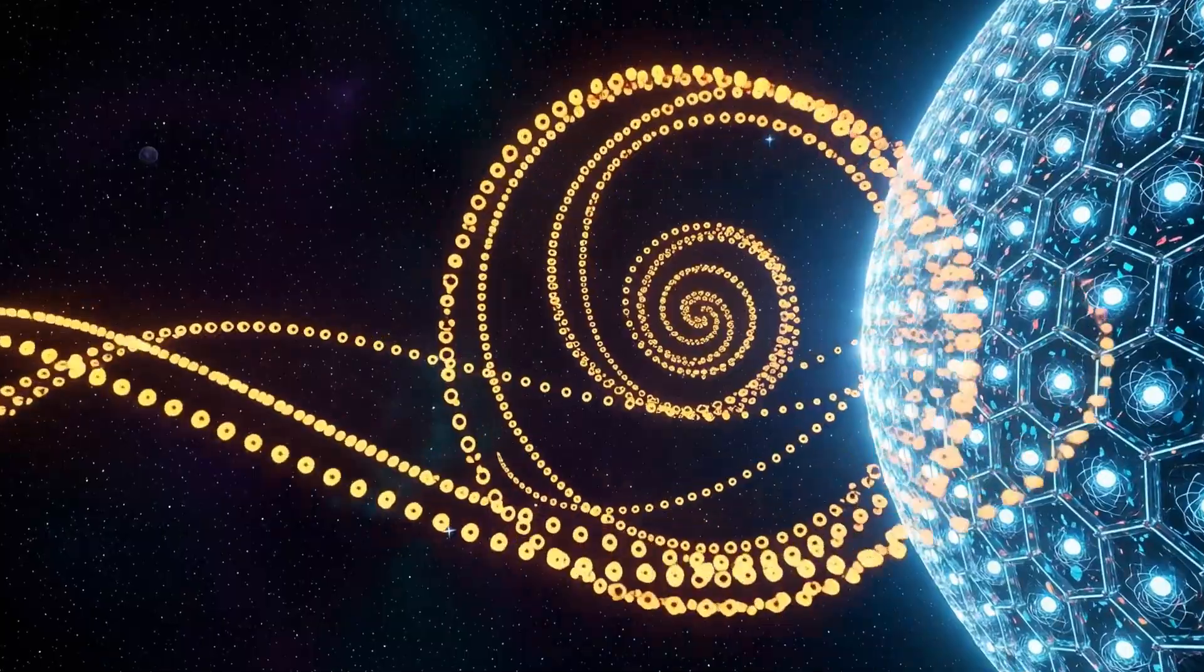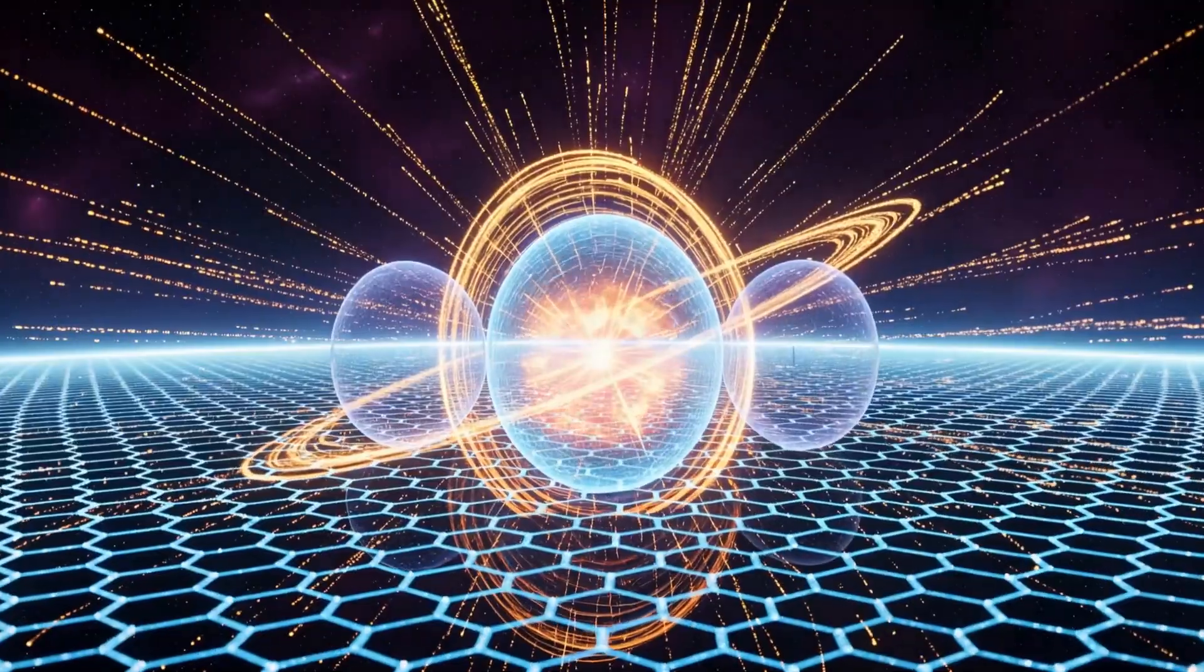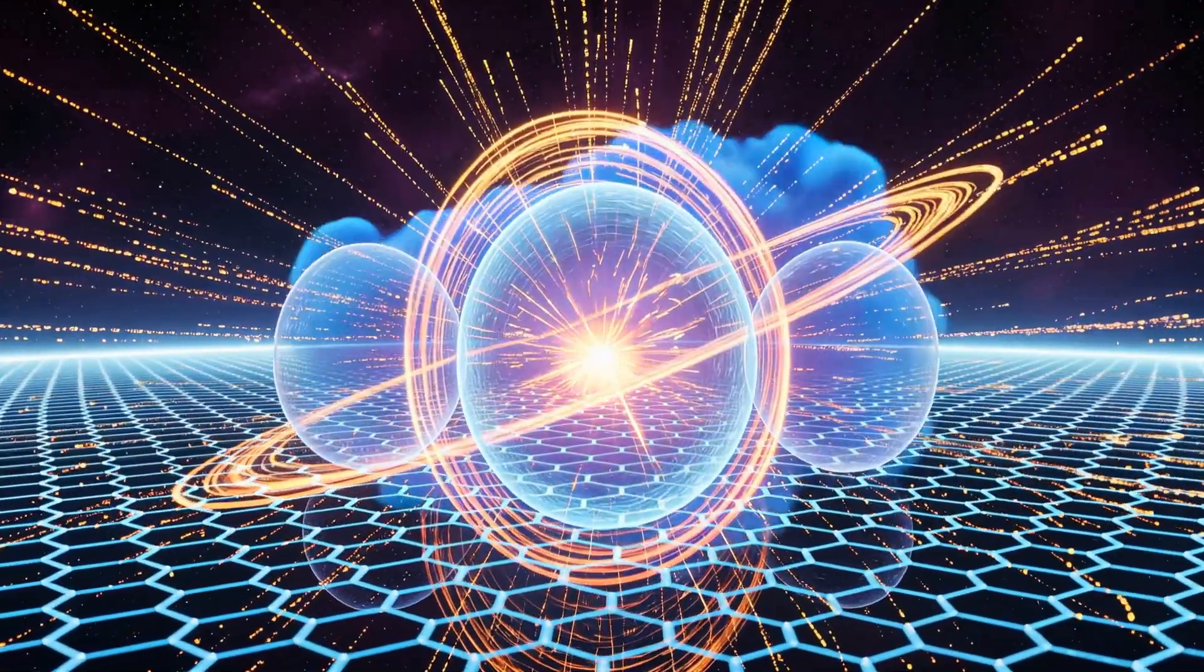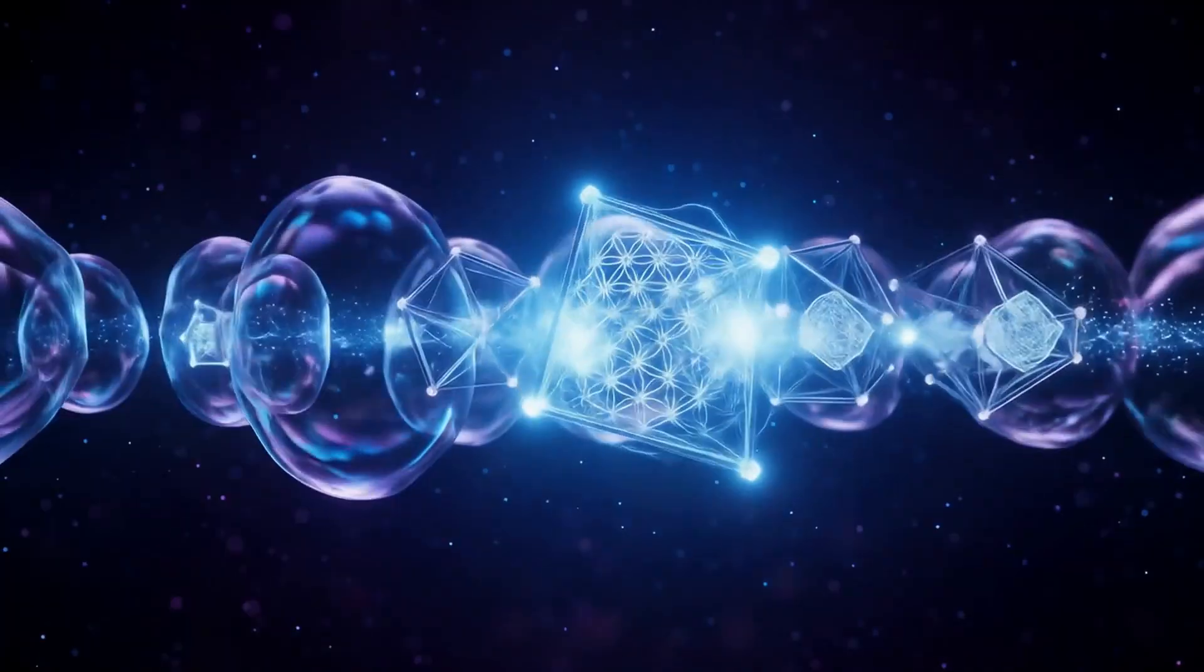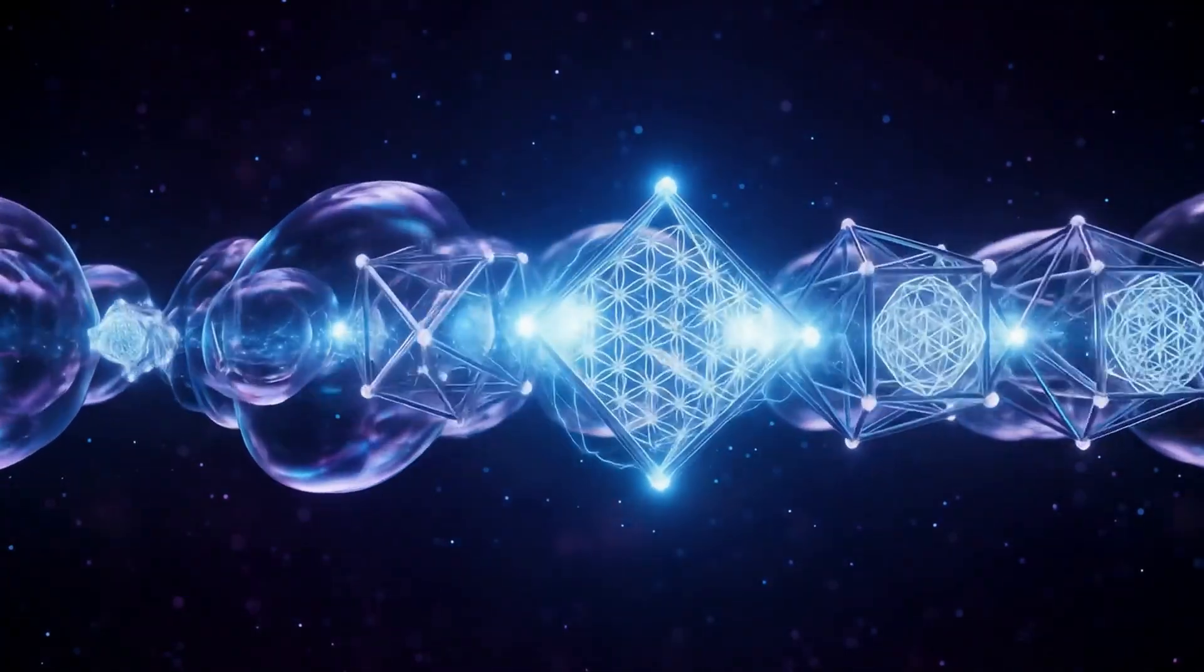When this radiation meets the qubits, the interference collapses the wave function, transforming probability into geometry. Every projection is an observation, and every observation is creation.